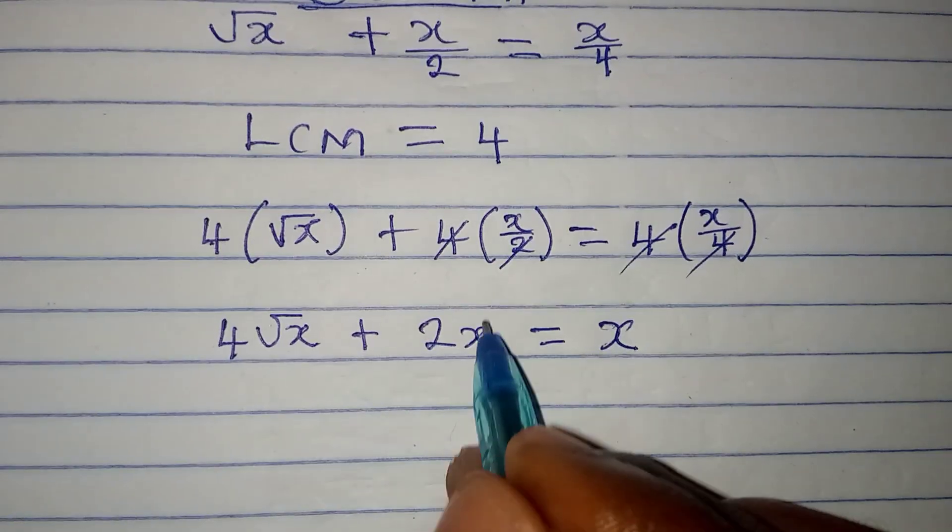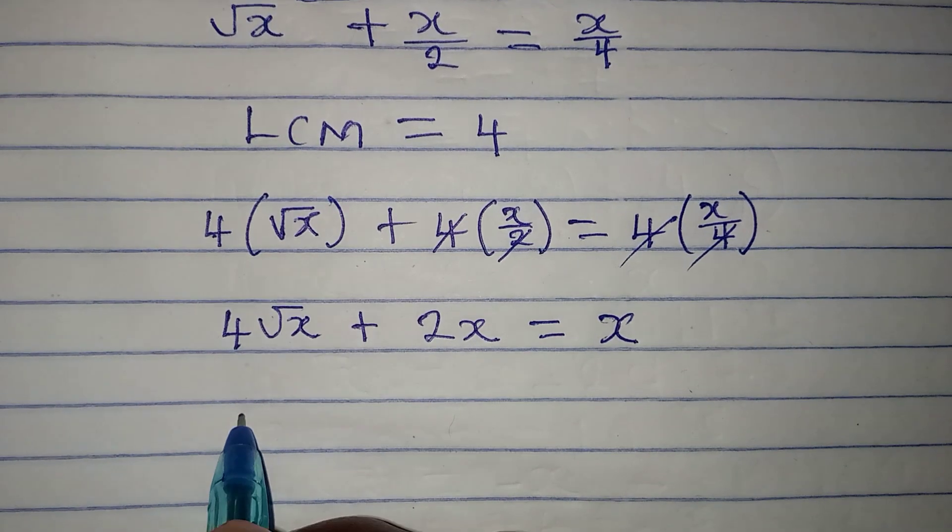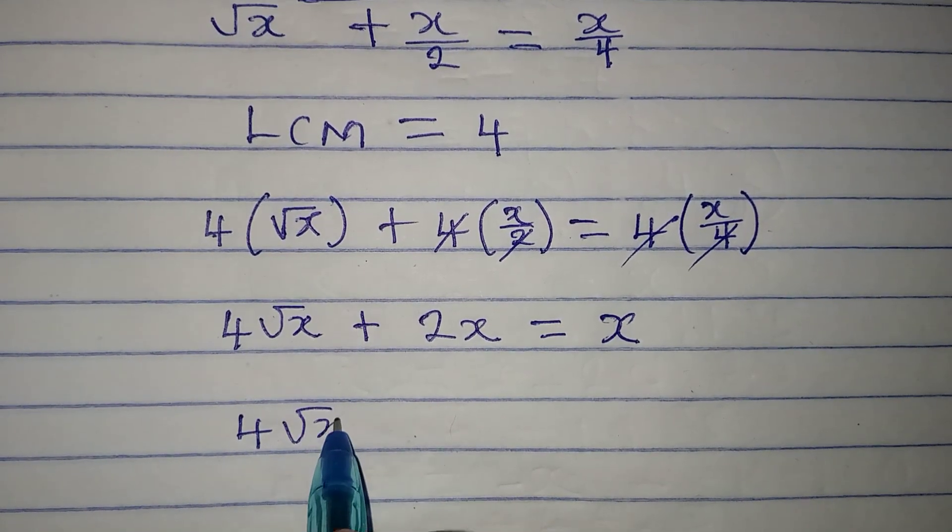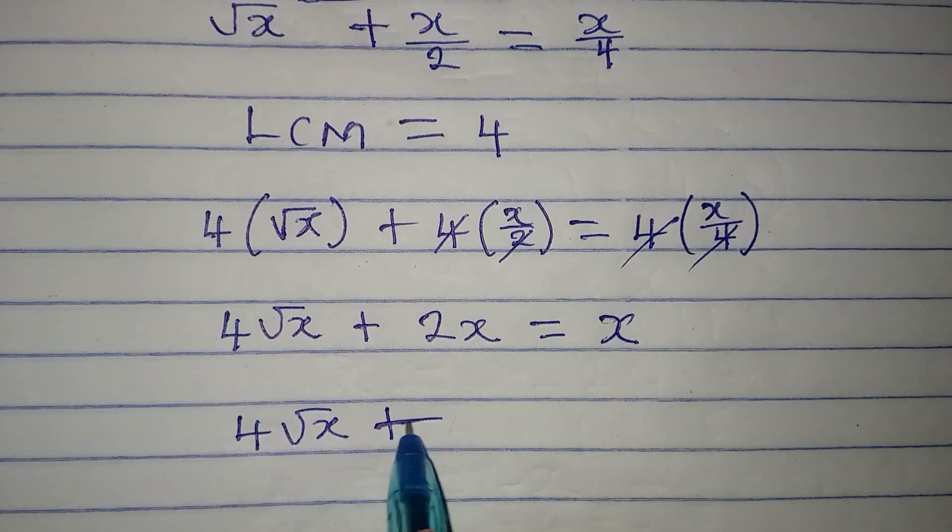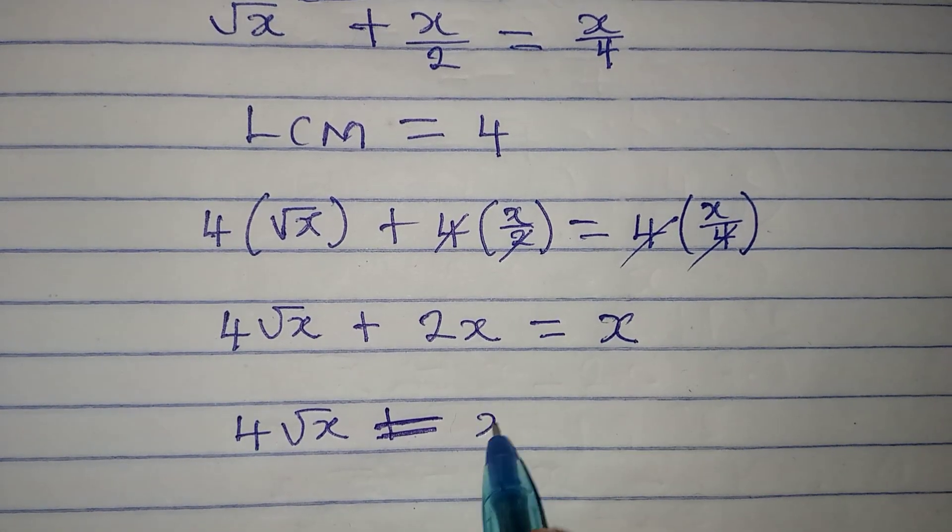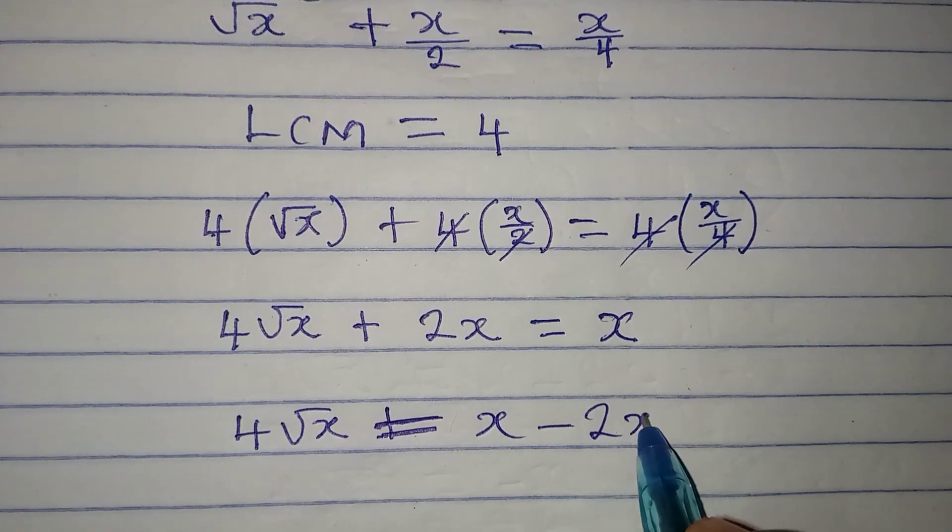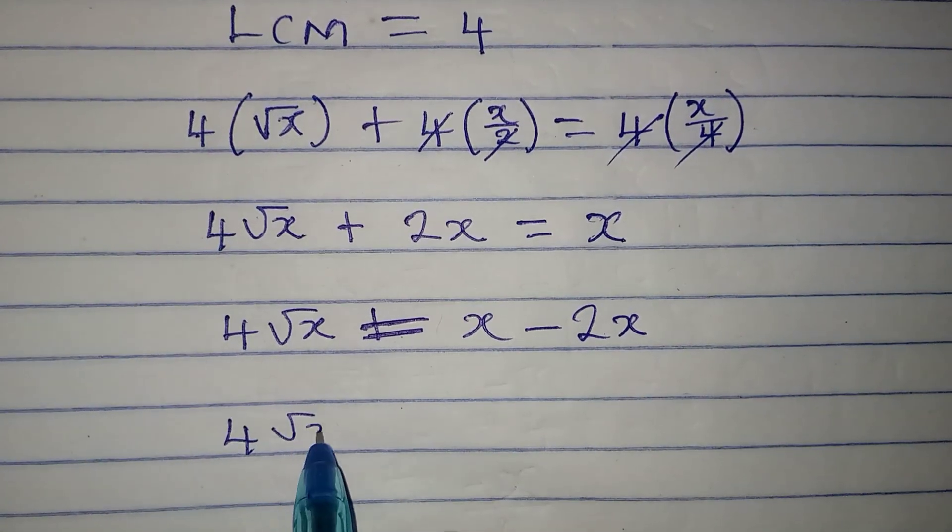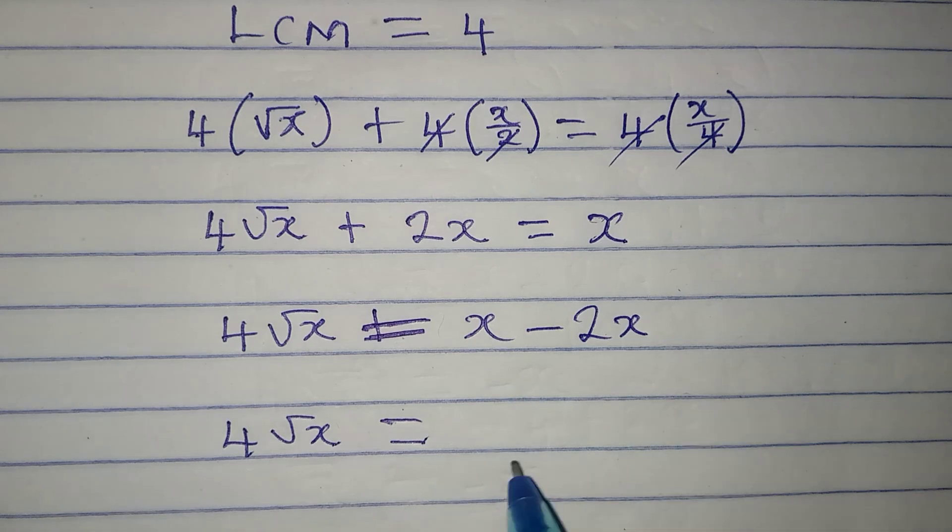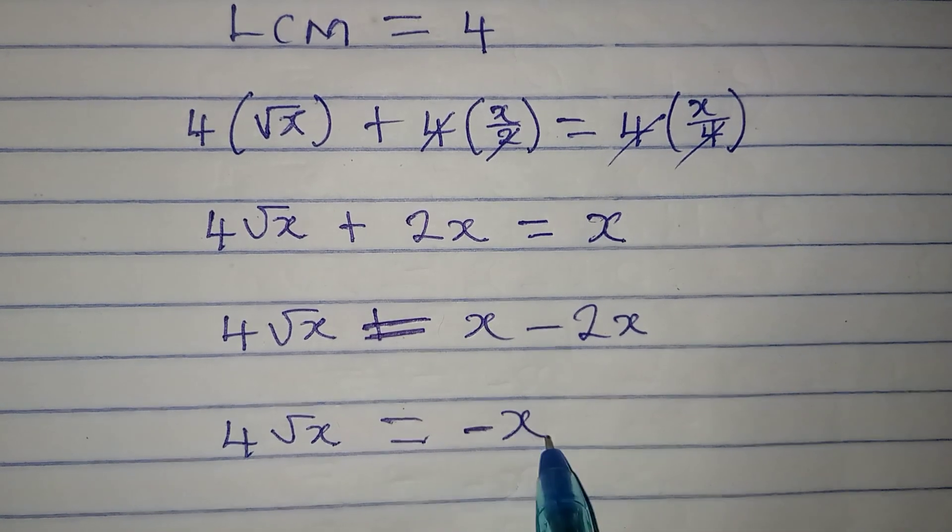Now I want to take 2x to the other side, so I have 4 root x. This is equal to x minus 2x, so that's 4 root x will be equal to x minus 2x and it's minus x.